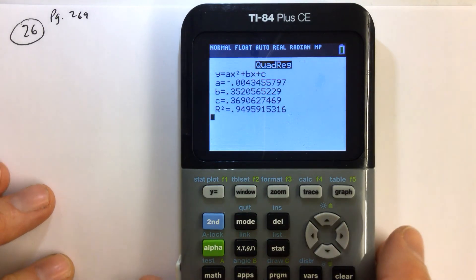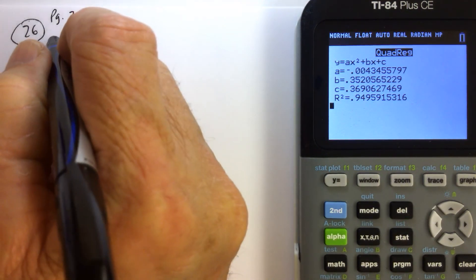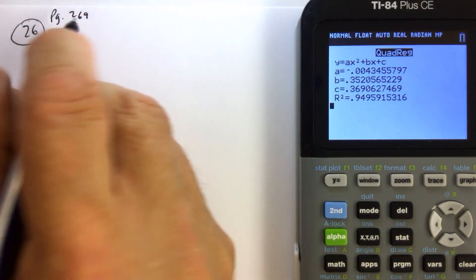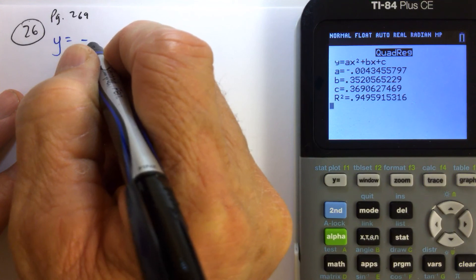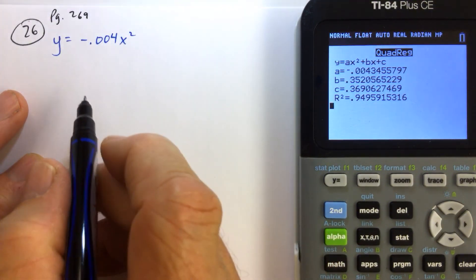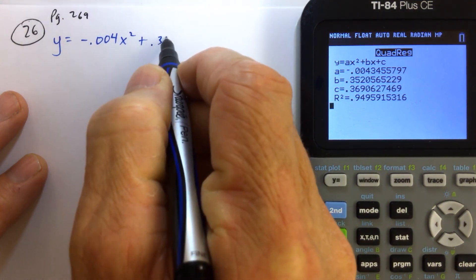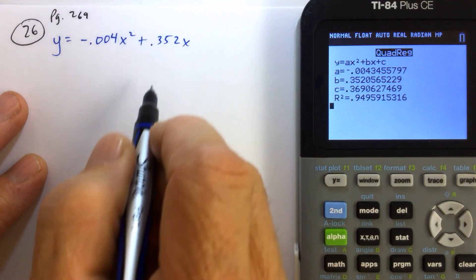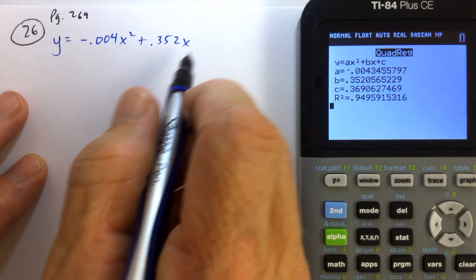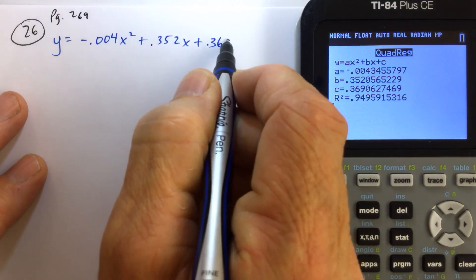And we can see we have our parameters for our quadratic model. So therefore, we have y equals negative 0.004 x squared, so the a value is negative 0.004, the b value is 0.352, and the c value is 0.369, plus 0.369.